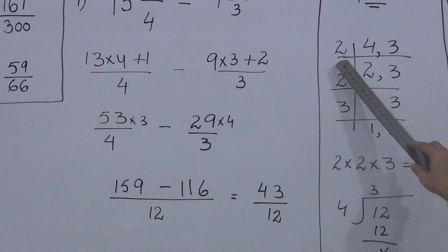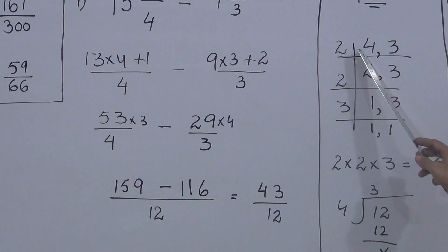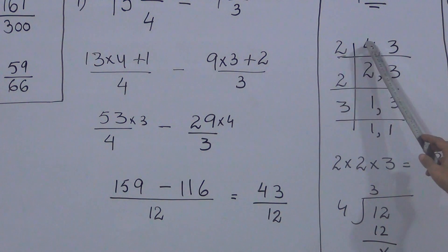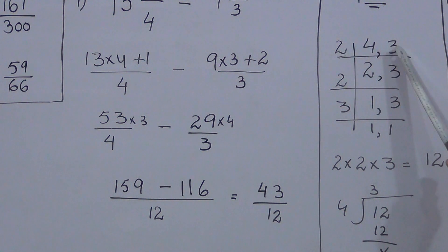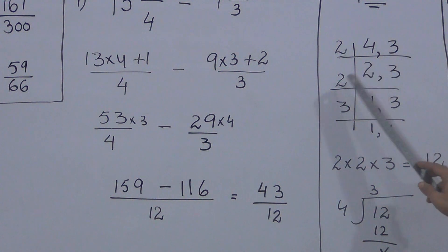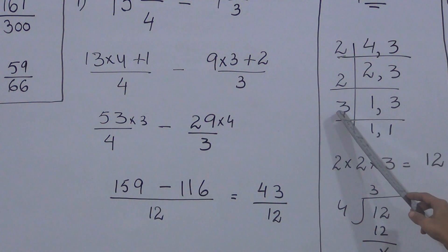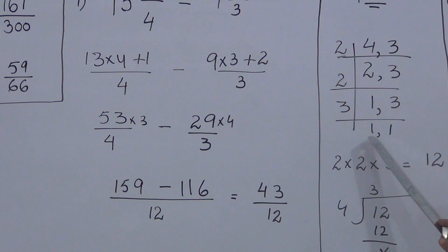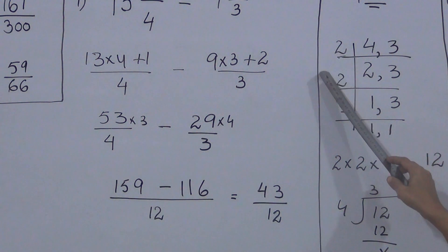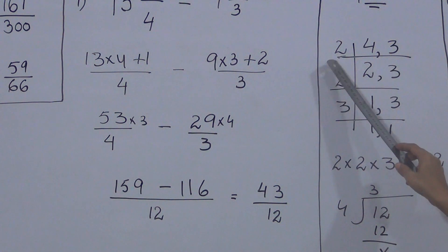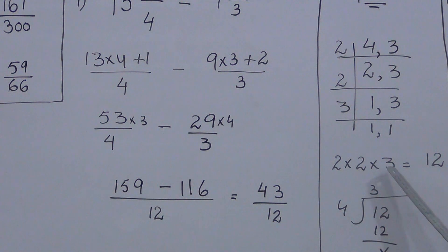So from the LCM method, the prime numbers are 2, 2, and 3. Therefore LCM = 2 × 2 × 3 = 12. 12 is the new common denominator for both fractions.